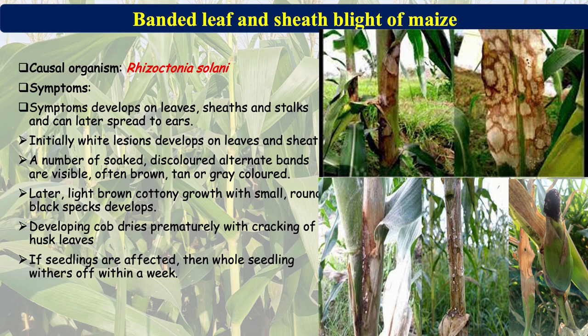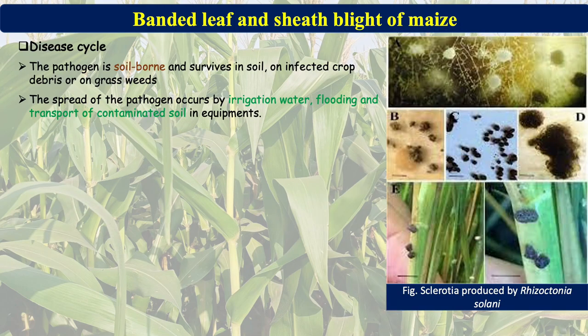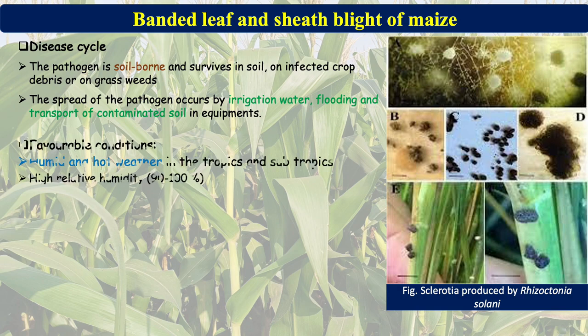Because of Rhizoctonia solani infection, developing ears dry up prematurely with cracking of the husk leaves. If the pathogen attacks seedlings, the whole seedling withers within seven days. Being soil-borne, the pathogen survives in the soil by producing sclerotia, or on infected crop debris and grass weeds. Spread occurs through irrigation water, flooding, and transport of contaminated seed or soil on equipment.